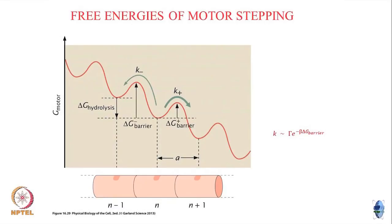Here is my free energy landscape as the motor is moving. At every step the minima is somewhat lower, which is why the motor wants to step forward in this direction. There are these barriers, and the difference between these barriers is coupled to the energy of ATP hydrolysis. The impetus to move forward in the preferred direction is coupled to this ATP hydrolysis step. ATP or GTP must bind and then hydrolyze and release the energy in order for the motor to move forward.